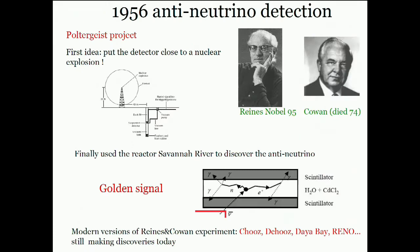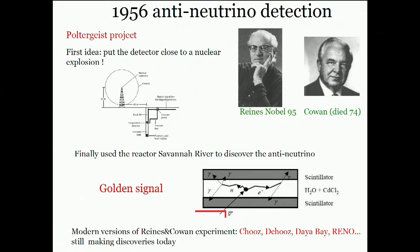If you open your hand at 100 metres from a reactor, you will be receiving about 10^11 neutrinos per second. This is precisely how the neutrino was first discovered in the famous experiment by Reines and Cowan, who used the reactor at Savannah River to discover the antineutrino. Modern versions of this experiment — Chooz, Double Chooz, Daya Bay, Reno — are still making discoveries today.